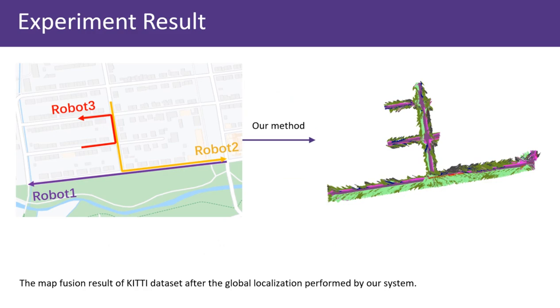This is a map fusion result on the KITTI dataset. As seen in the left figure, three trajectories are split from the sequence. Every two trajectories share overlaps in opposite directions. And the right figure shows the map fusion result after the global localization performed by our system.